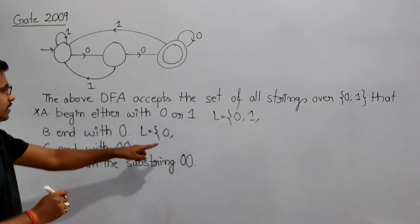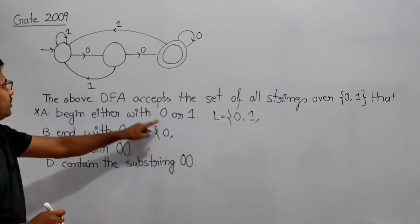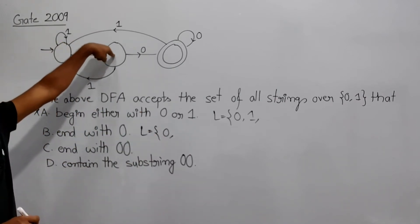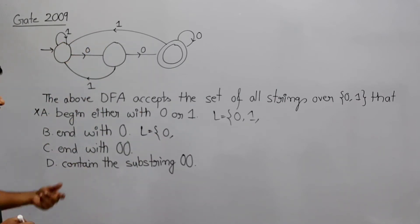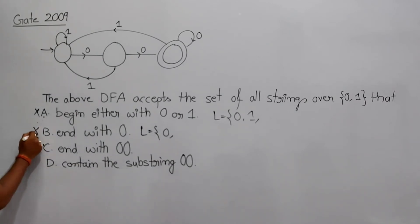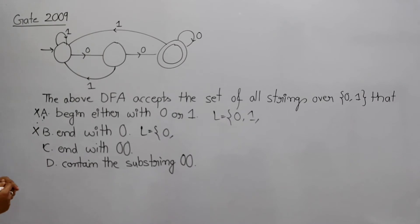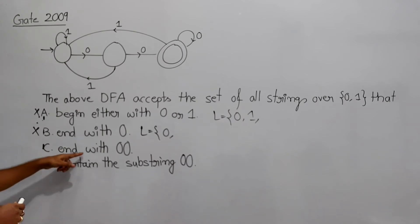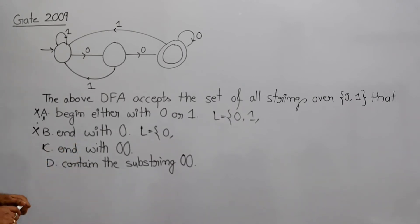Option B says the language contains only strings ending in '0'. The string '0' — reading '0' it reaches a state that is not a final state, so it gets rejected. Therefore option B is also incorrect — it is not the correct language for this DFA.